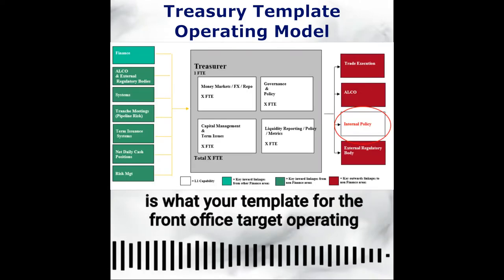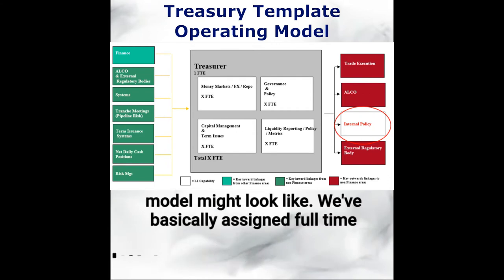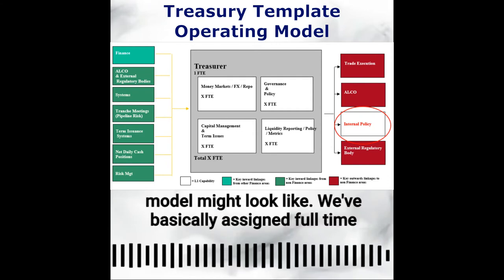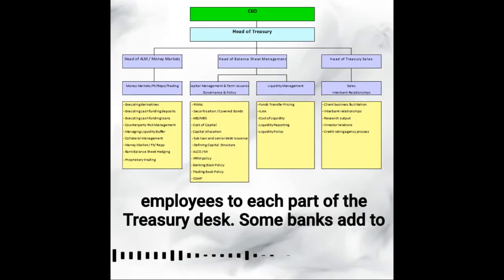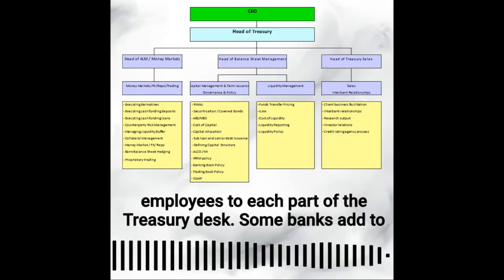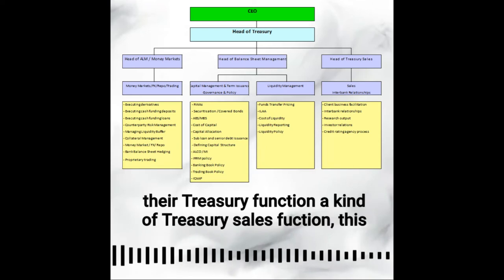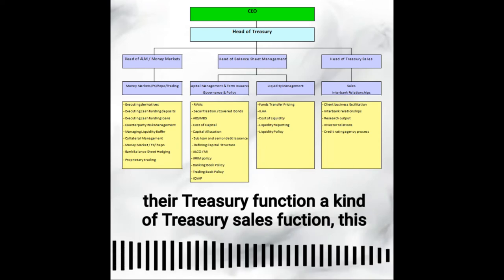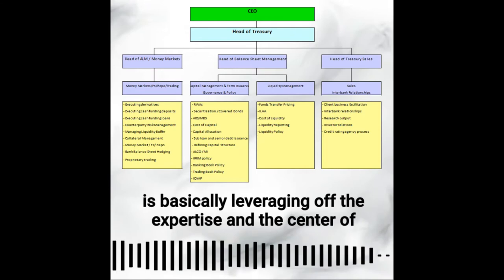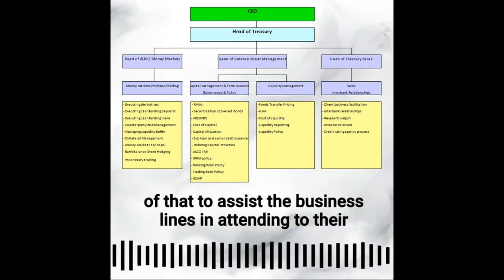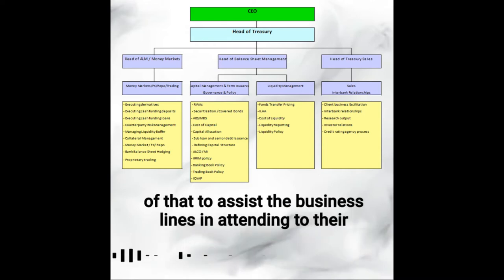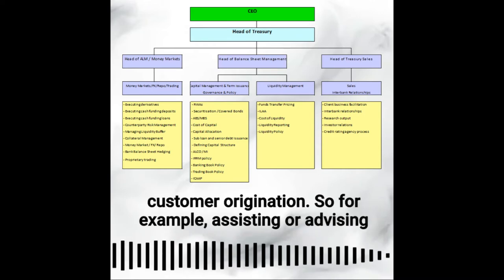And here is what your template for the front office target operating model might look like. It would basically assign full-time employees to each part of the treasury desk. Some banks add to their treasury function a kind of treasury sales function, basically leveraging off the expertise and the center of excellence for ALM from the treasury function to assist the business lines in supporting their customer origination.